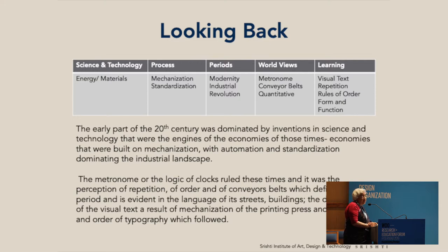Modern times, as Charlie Chaplin showed in his film — the conveyor belt became the visual metaphor. Everything was quantitative because it had to be measured. And in learning we realized that our streets, our buildings, the visual text which was a result of mechanization of the printing press, and the rules of typography were what we learned to use in design.